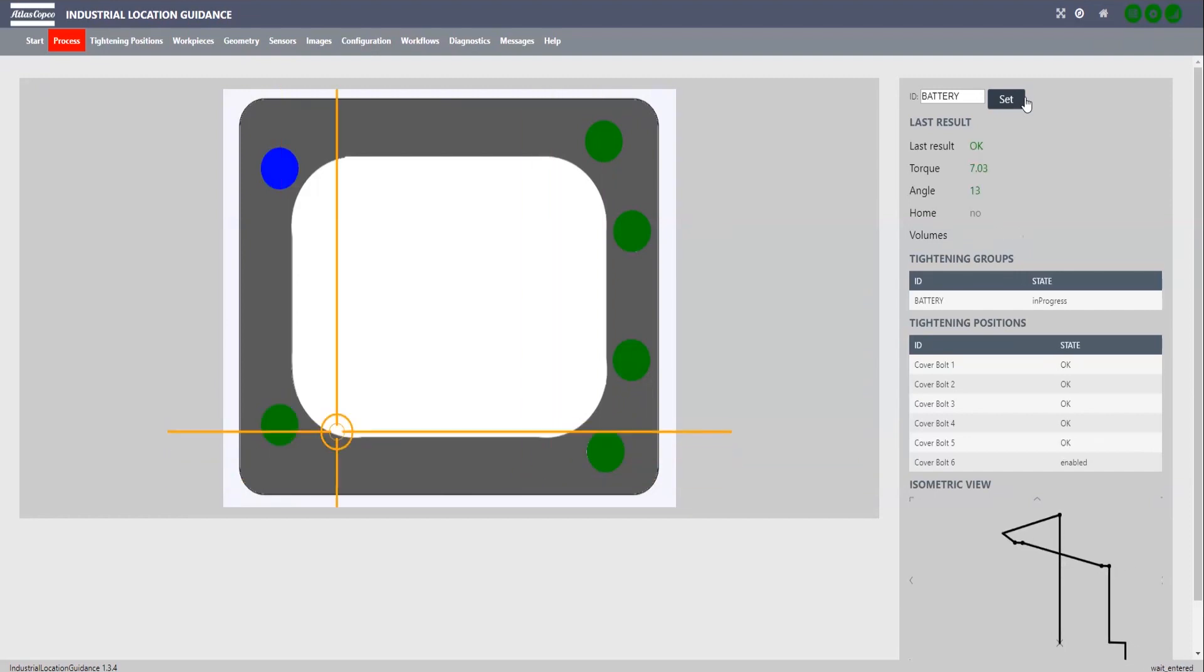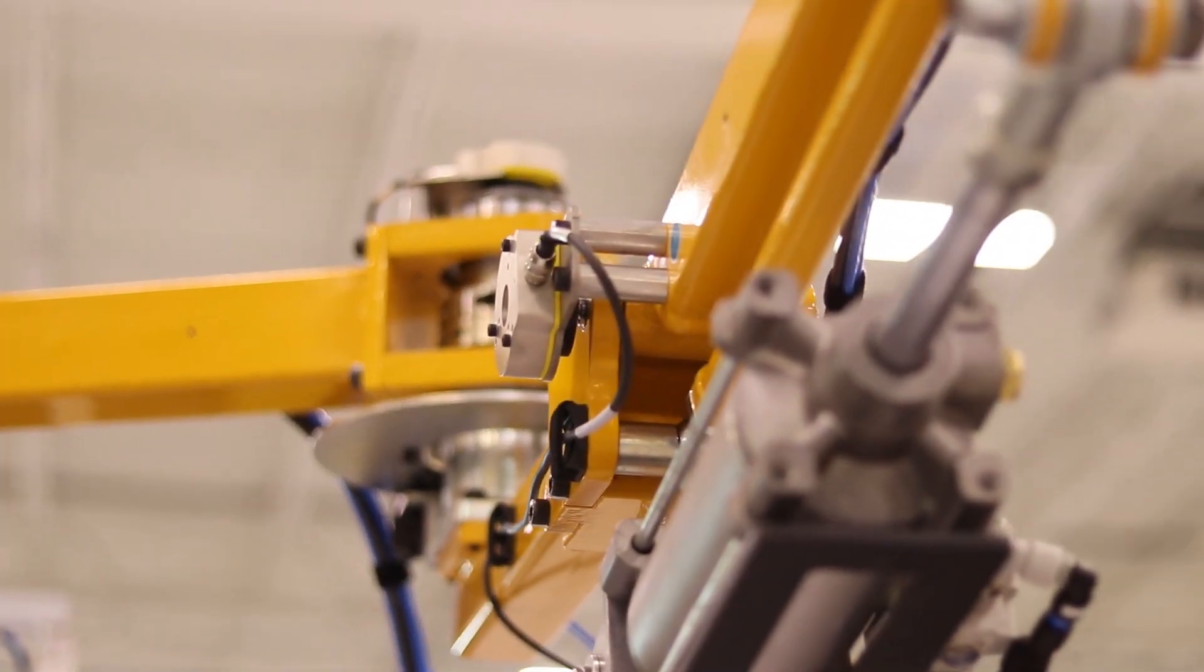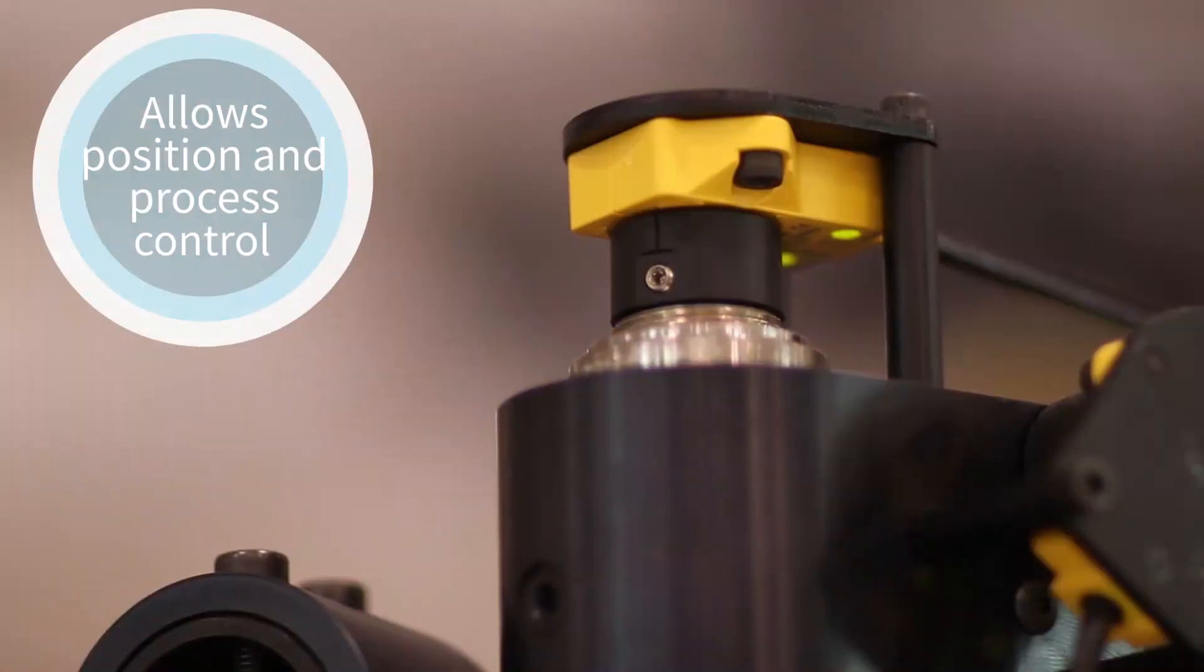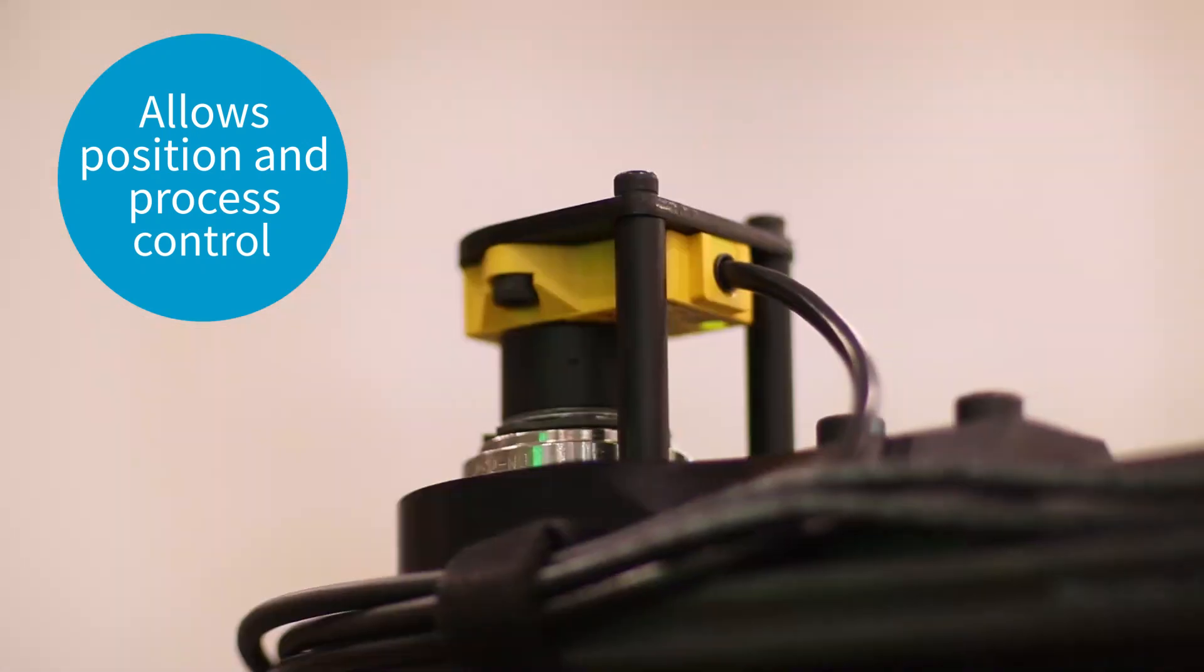Comprised of ILG software, positioning hardware, and tightening controller, the ILG system allows for position and process control on multiple arm types.